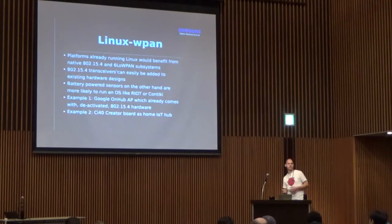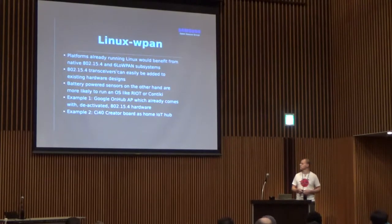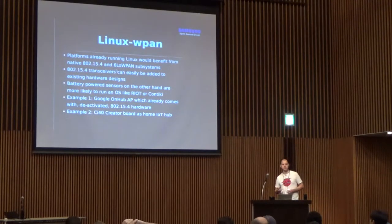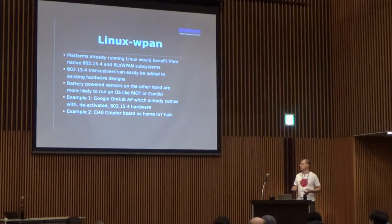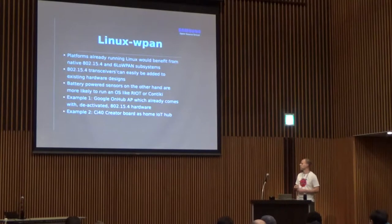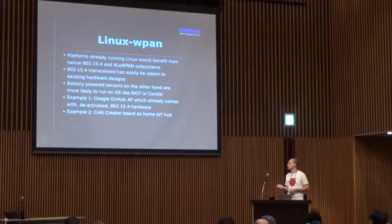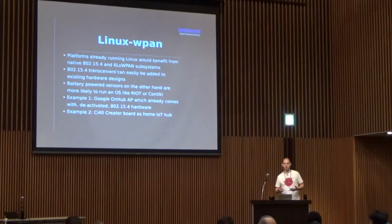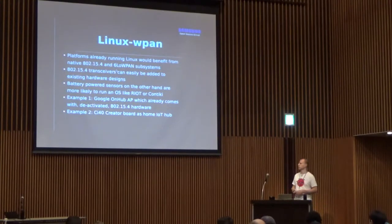As long as these platforms already support Linux, adding mainline kernel support makes it easier for manufacturers to integrate. The sensors themselves are more likely to run different operating systems. One example is the Google OnHub router, which ships with a 15.4 transceiver that's currently disabled in hardware — they promised to enable it via a software update at some point. Another example is the CI40 Creator board from Imagination Technologies, a developer board offering Wi-Fi, Bluetooth Low Energy, regular Bluetooth, and a 15.4 transceiver.